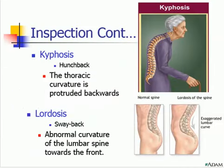Kyphosis, also known as hunchback, is a condition where the thoracic curvature protrudes backward. Lordosis, also known as swayback, is an abnormal curvature of the lumbar spine towards the front. It is also seen in pregnant ladies.